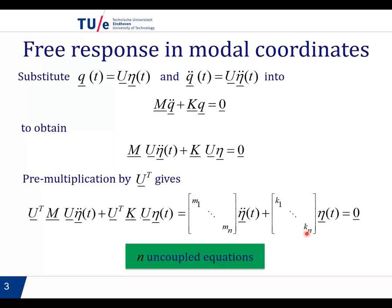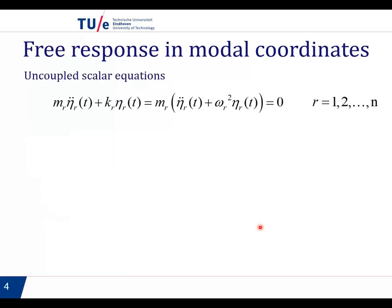The consequence of this is that we end up having n uncoupled equations. So we go from a situation where we have n coupled equations to n independent equations. This can be seen more clearly in the next slide. This matrix expression can be written also in the following way, simply writing each of the equations separately.